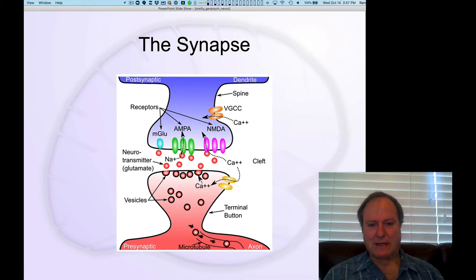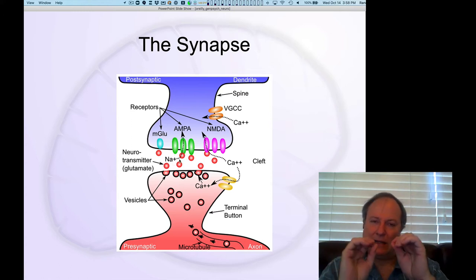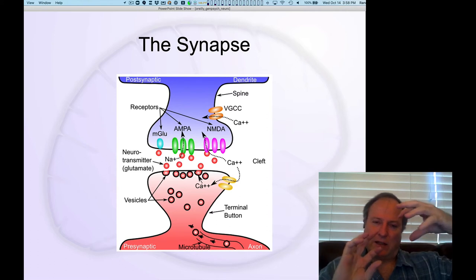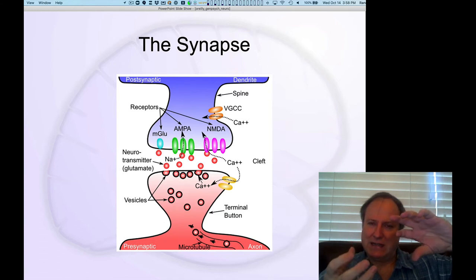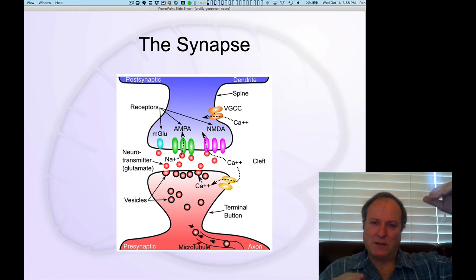And in this post-synaptic density of the spine, you have these AMPA receptors that receive this neurotransmitter. When the neurotransmitter binds to the AMPA receptor, it changes the chemical properties, the electrical properties of that AMPA receptor and causes it to twist open. There are these containers that open and close by twisting. If you twist it, it's more tight. If you untwist it, it's more open.